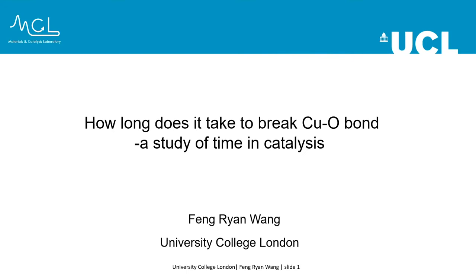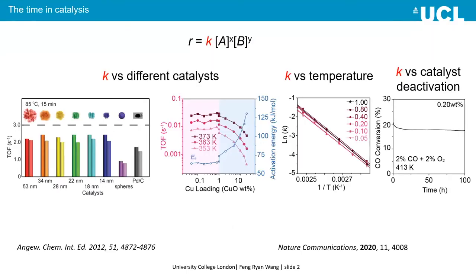The first speaker, Martin, also discussed that timing is very important in catalysis. For any chemical reaction, we can always write a rate equation where reactions are a function of time. The reaction constant k describes how fast the reaction takes place. In catalysis, especially for heterogeneous catalysis, we can plot k as a function of different catalysts to describe their catalytic performance.